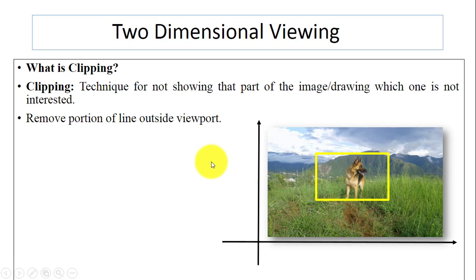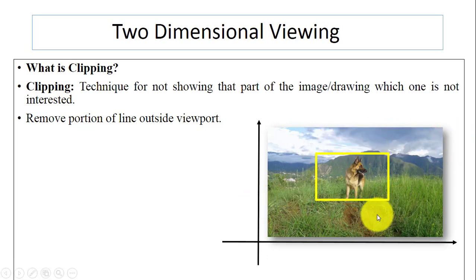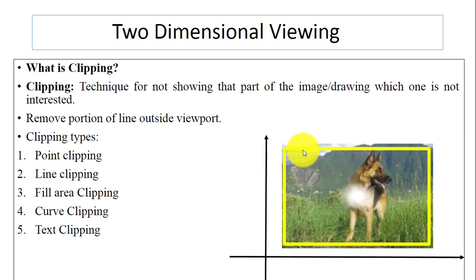Now we have another technique — the clipping technique. Using this technique we can remove the extra portion. This is the technique for not showing that part of the image which we are not interested in. In this image I just want to display the dog on the screen, so I will remove the extra portion. We will remove the portion of the line outside the viewport using clipping, and this is the final output.